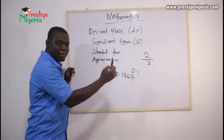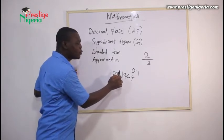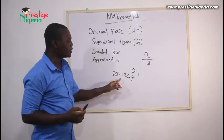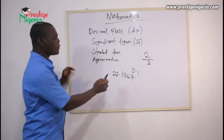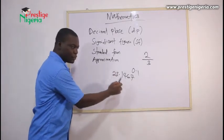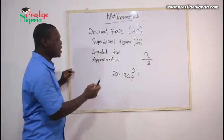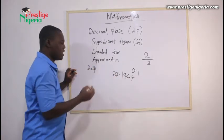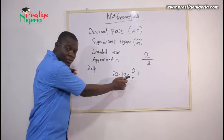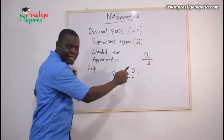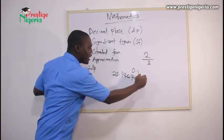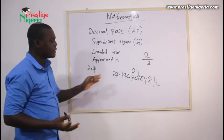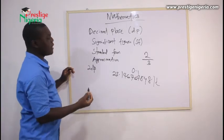So if a question asks you to express your answer in a particular decimal place, they are telling you they want to see only a certain set of numbers after the decimal point. For example, if I give you 22.1467 and ask you to express it in two decimal places, that means we only want to see two numbers after the dot. If they say three decimal places, we want to see three numbers after the decimal point, and so on.